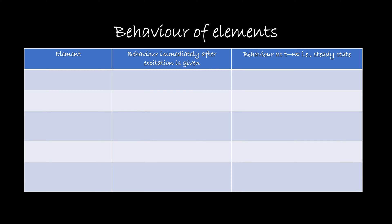Before getting into the exact analysis of transients, we need to understand the behavior of elements. Basically, we have three types of elements: resistor, inductor, and capacitor. Let us see how each element will behave immediately after the excitation and when it reaches its steady state. This table is very important.